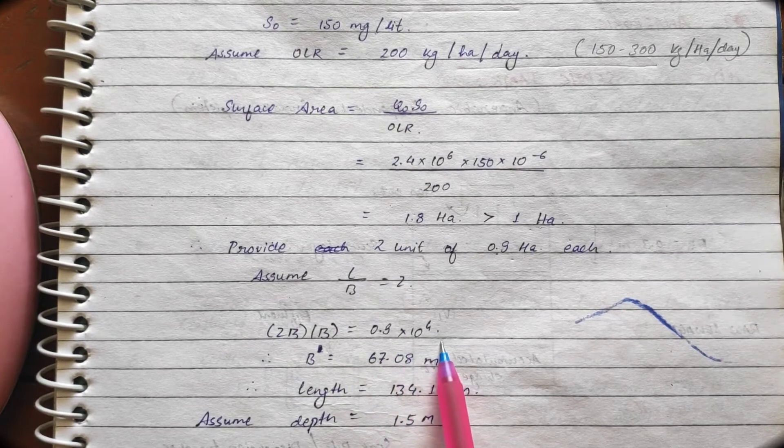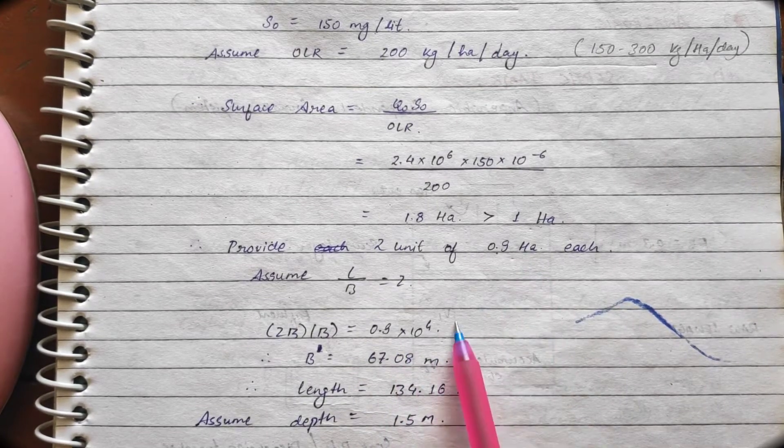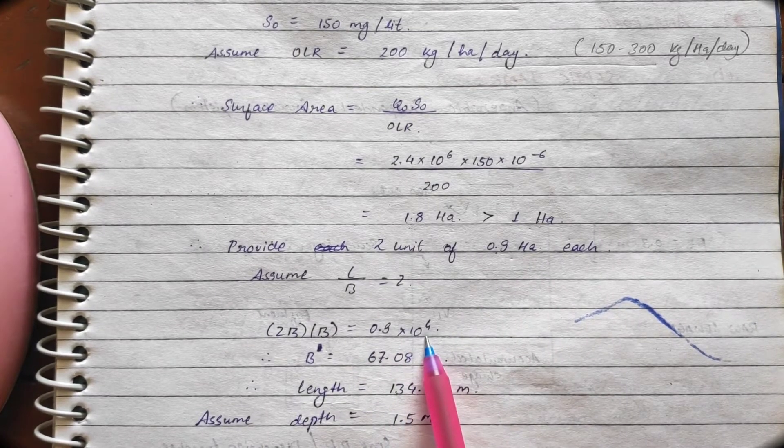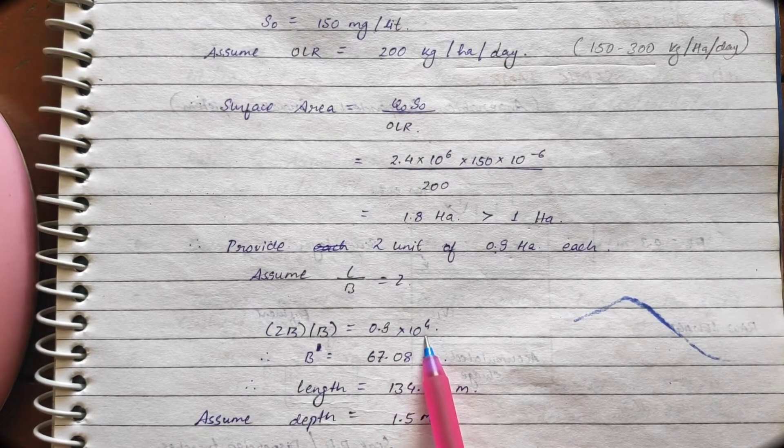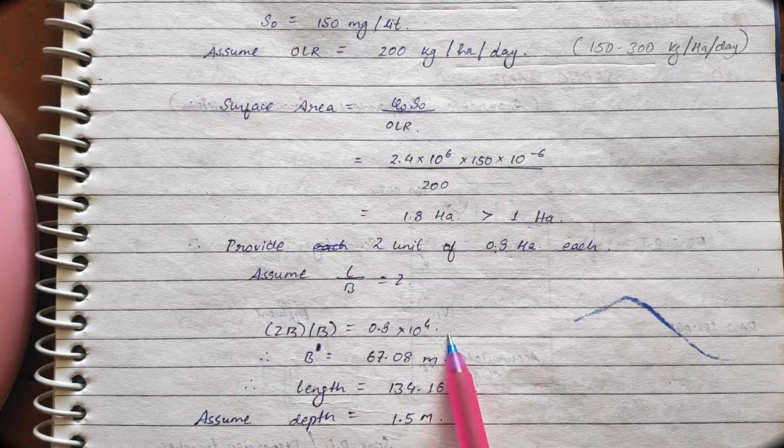L into B is what? 0.9 into 10 raised to power 4. Now, this hectare needs to be converted in meter. Meter square. So, what we have done?